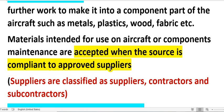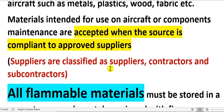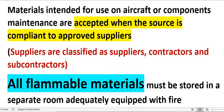Materials intended for use on aircraft or component maintenance are accepted when the source is compliant with the approved supplier. Suppliers are classified as suppliers, contractors, and subcontractors.